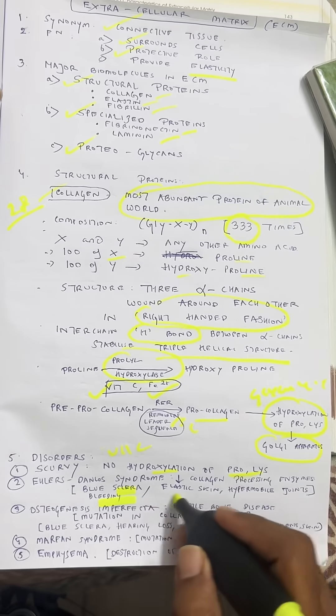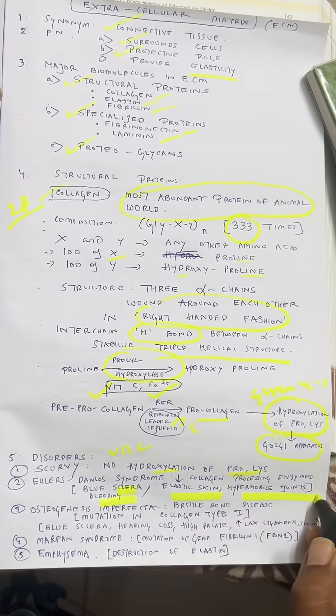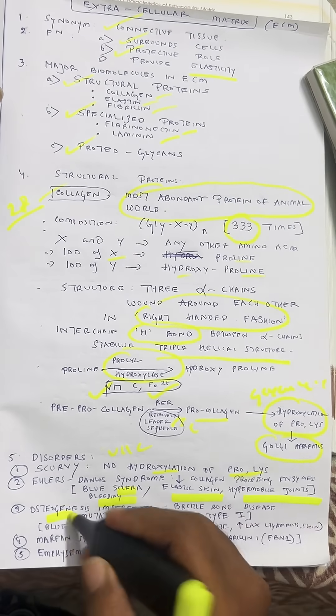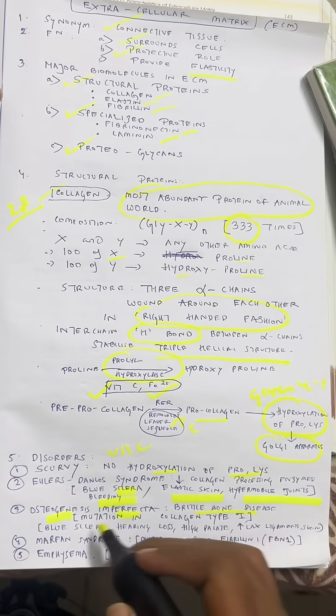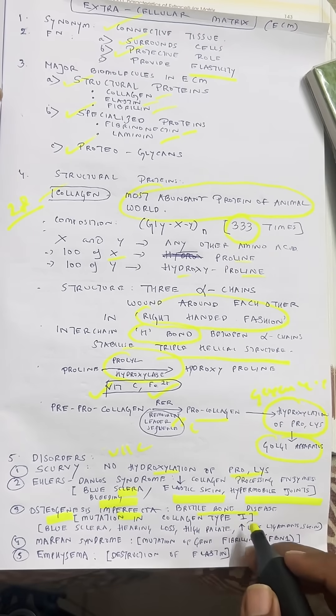Symptoms include blue sclera, bleeding disorders, hyperelastic skin, and hypermobile joints. Osteogenesis imperfecta, also called brittle bone disease, is due to mutation in collagen type 1.